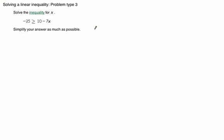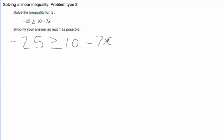All right. Here's a second example. If we look at this problem, negative 25 greater than or equal to 10 minus 7x, our process is the same. We want to isolate this x variable term. So we've got to subtract 10 from both sides.